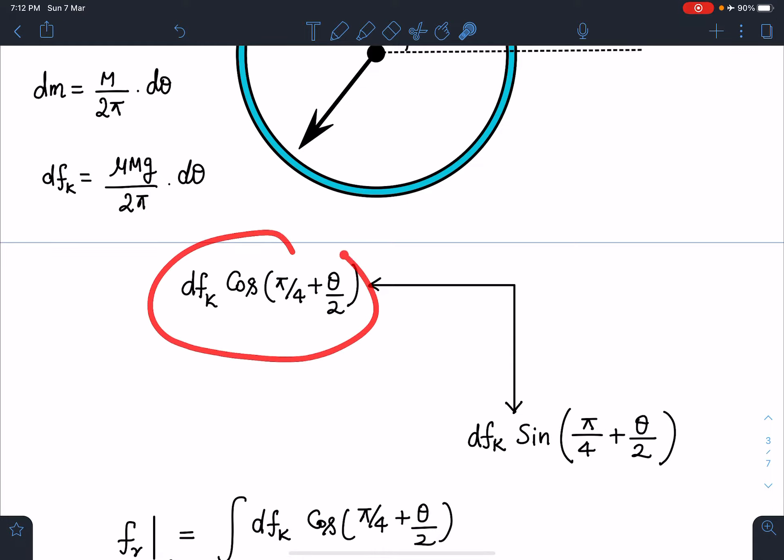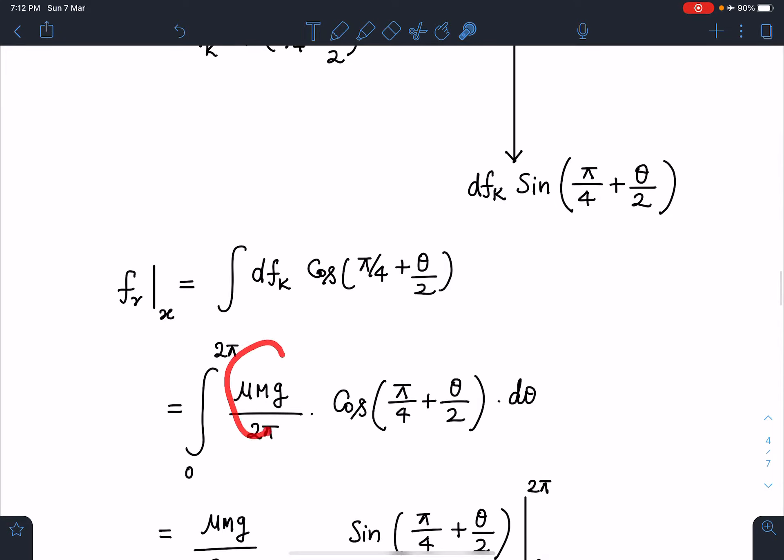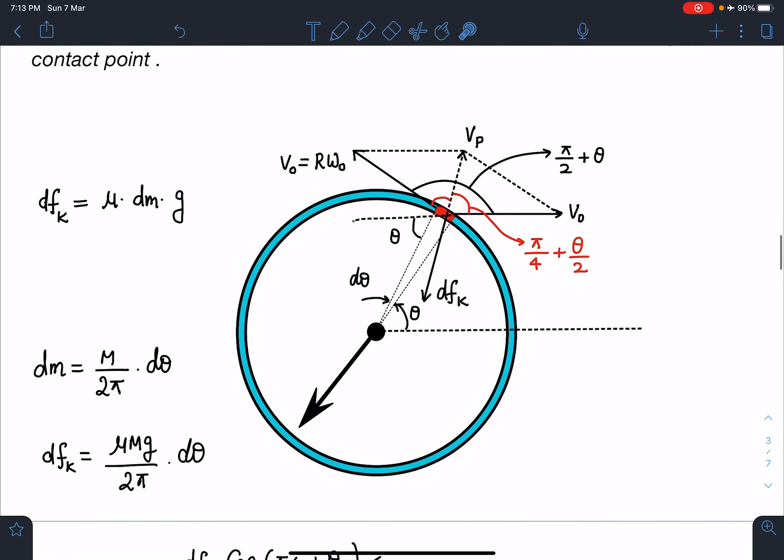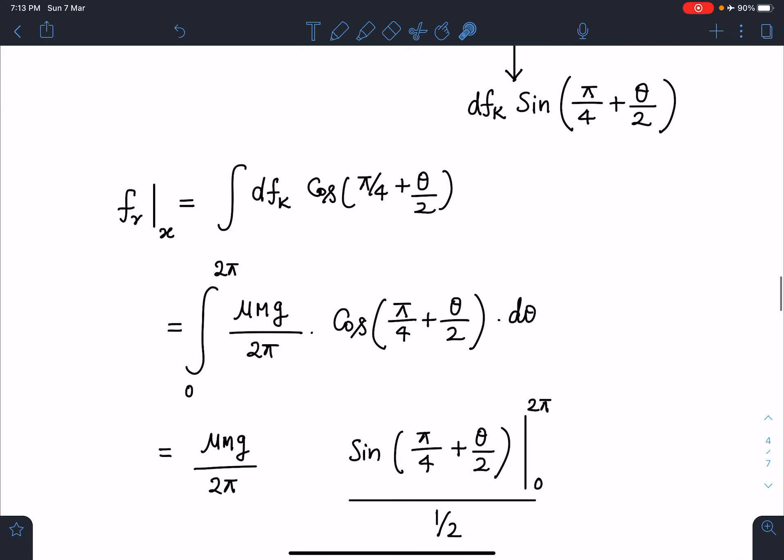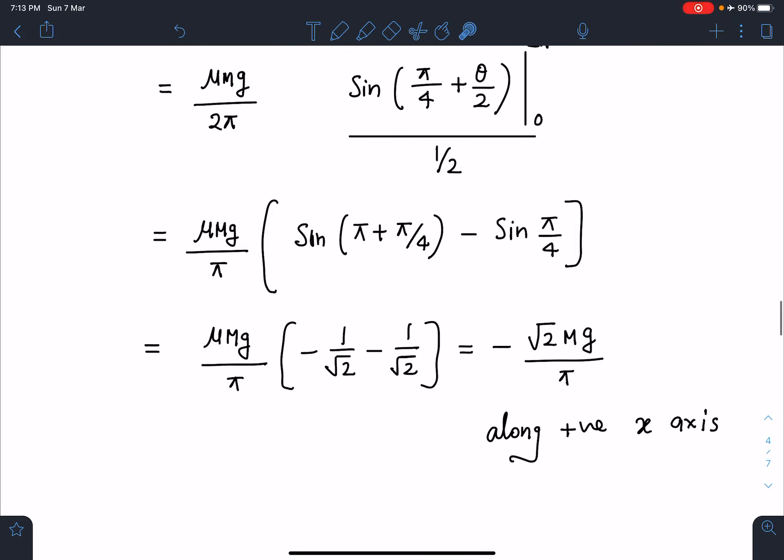Let us calculate this x-component of friction. I can simply write dfₖ cos(π/4 + θ/2). When I substitute the value of dfₖ, μMg/(2π) I can take outside and this will become an easy integral: cos(π/4 + θ/2) dθ. If you integrate over this entire ring, θ will go from 0 to 2π. When we simplify this, I am getting this as minus √2 Mg/π. This minus sign indicates we are taking towards negative x, so actually its direction will be towards positive x-axis. So x-component of friction will be acting towards positive x-axis.